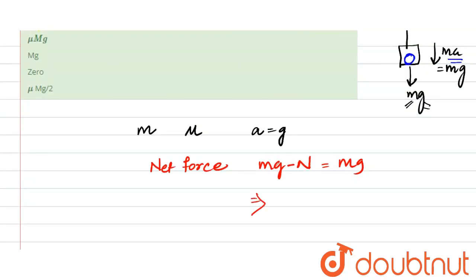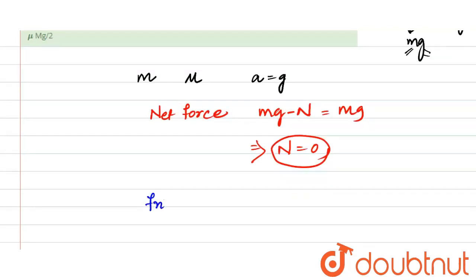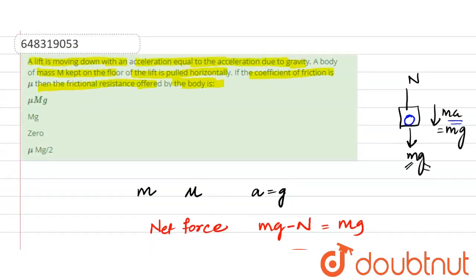So mg minus N equals mg, which means N equals zero. The normal force on the body acting upward due to the lift is zero. Since frictional force equals mu times N, and N equals zero, the frictional force is zero. Therefore, the frictional resistance offered by the body is zero.